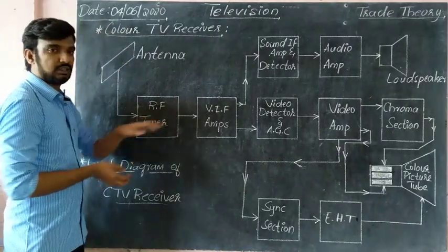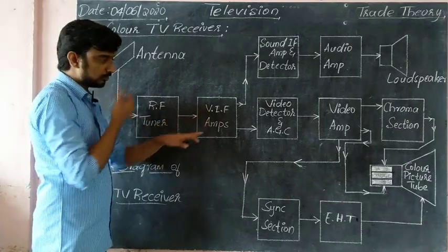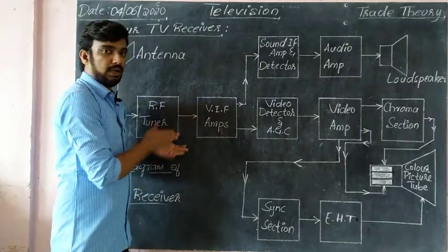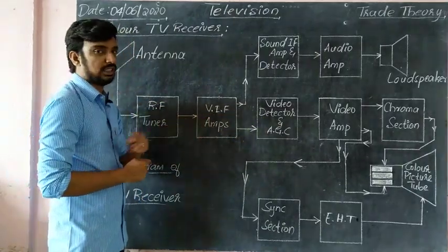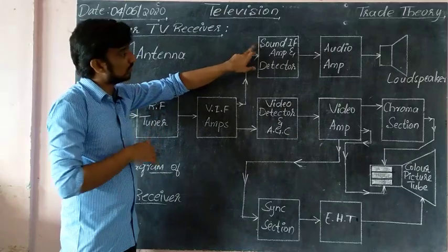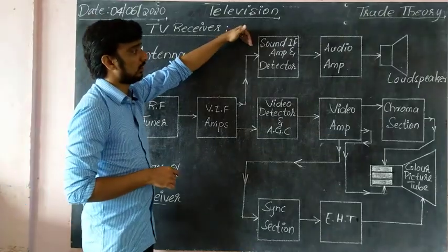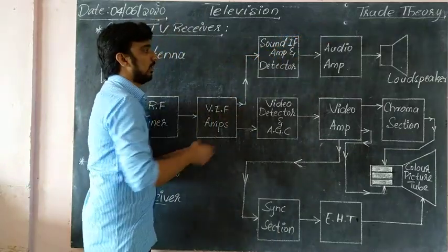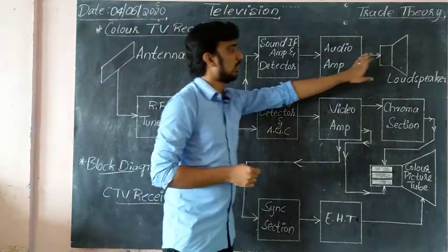At the video IF stage, the video IF also carries the sound IF. At the video detector stage, the video and sound signals are separated. From the sound IF, we go to the next sound section, which has the sound IF amplifier and audio amplifier. That produces the sound at the loudspeaker. This is similar to black and white TV.